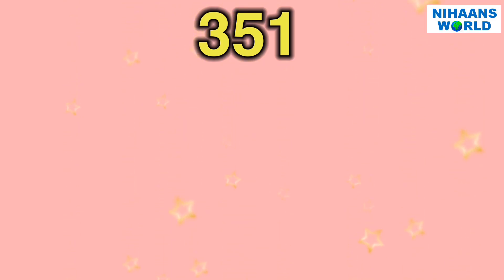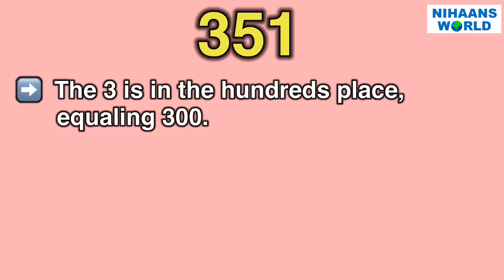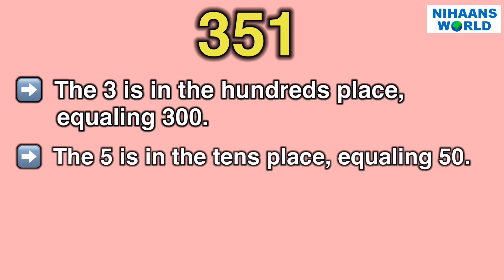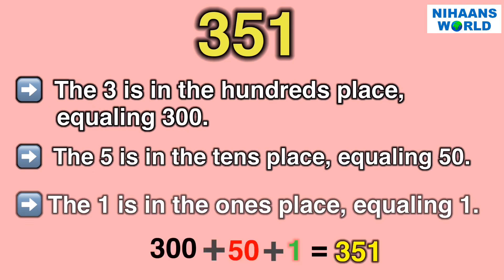Friends, let's look at another example: 351. The 3 is in the 100's place, equaling 300. The 5 is in the 10's place, equaling 50. The 1 is in the 1's place, equaling 1. So, 300 plus 50 plus 1 is equal to 351.